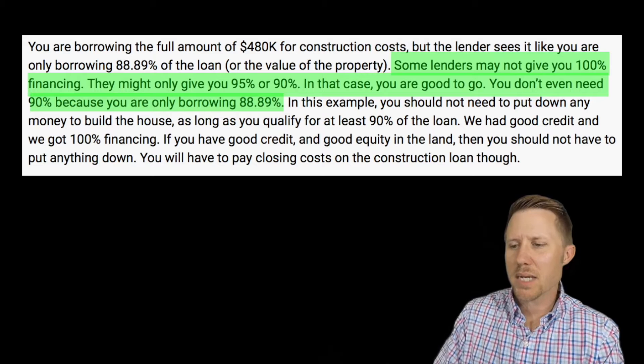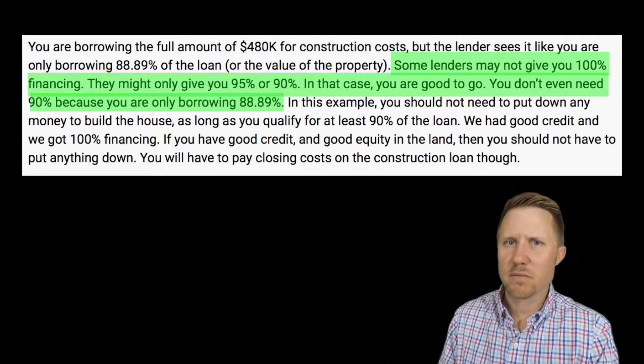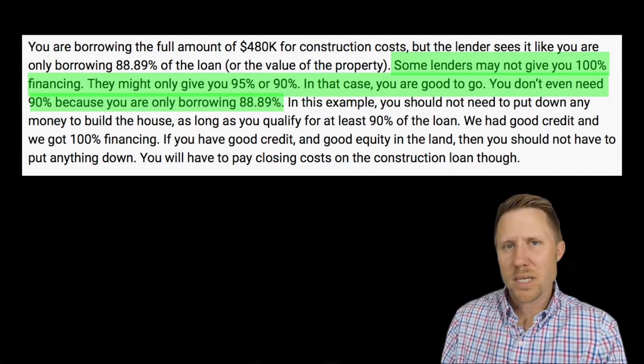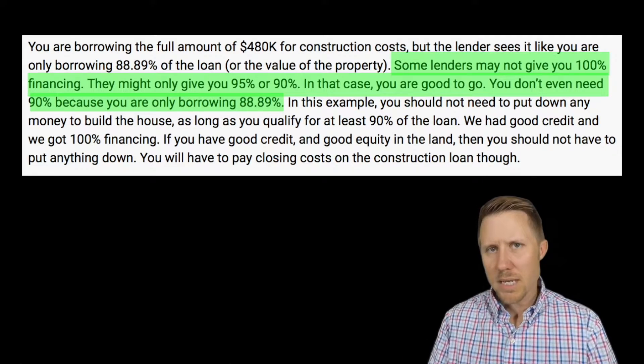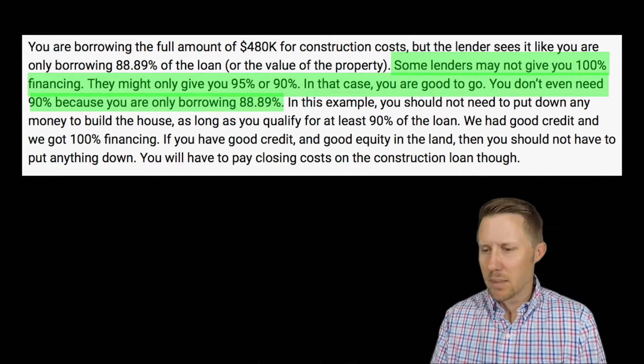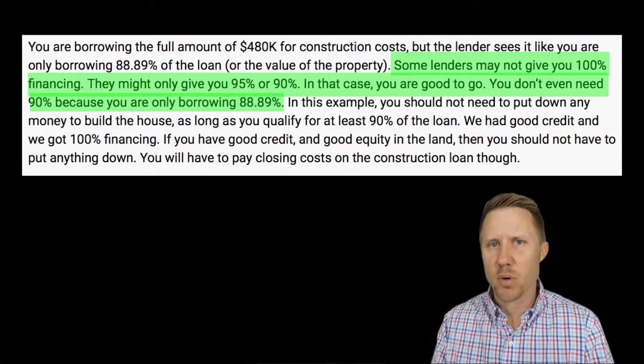If that land was not paid off, you might be borrowing 100% or even 110% of the value, and the lender is not going to go for that. So when you do this division, at least in his example, you can see he doesn't need to borrow 100% of the value — he needs to borrow 88.89%. Some lenders may not give you 100% financing even if you have great credit. They might only give you 95% or 90%. As long as he finds a lender that will let him borrow at least 90% of the value, he's good to go because he only needs 88.89%.